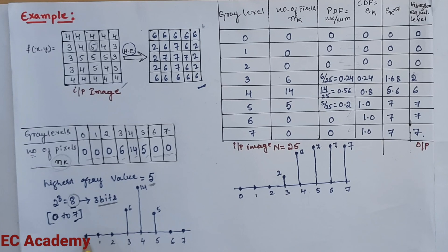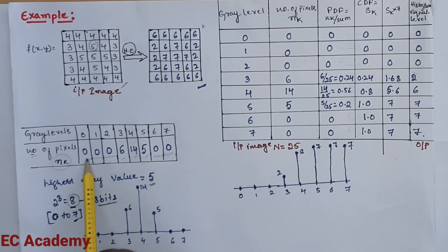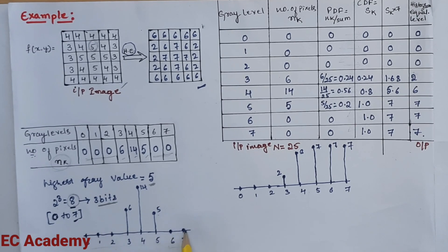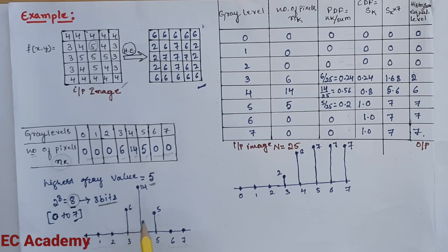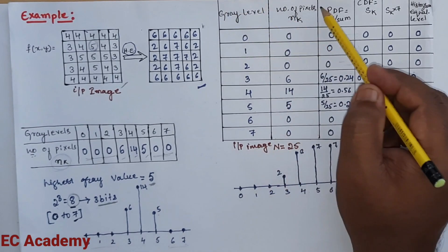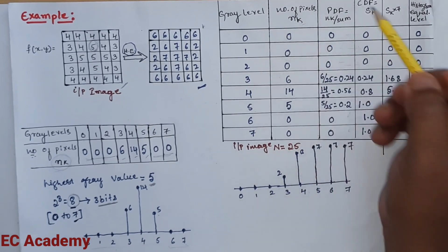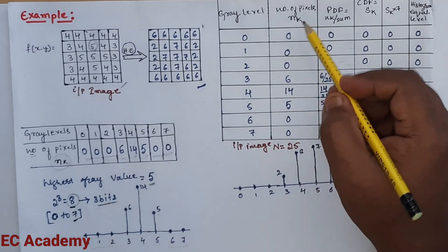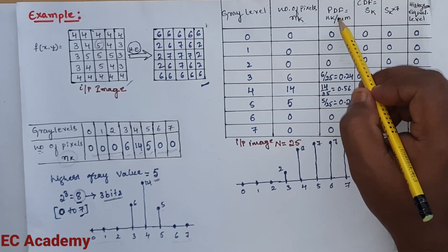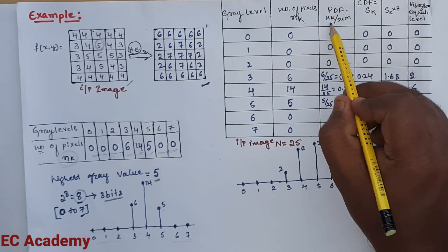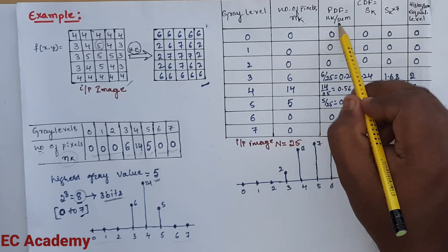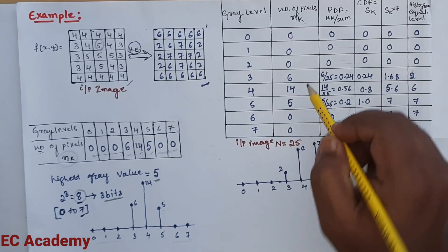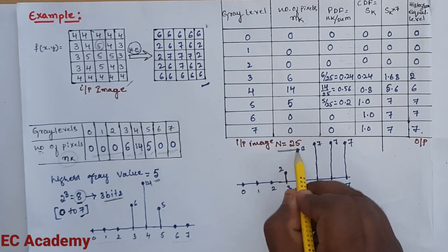To perform histogram equalization, we write down the gray level values (0 to 7) and the number of pixels NK at each level. Adding all NK values gives the total sum N = 25. Next, we compute the Probability Distribution Function (PDF) as NK divided by N. The PDF values are: 0, 0, 0, 0.24 (6/25), 0.56 (14/25), 0.2 (5/25), 0, and 0.